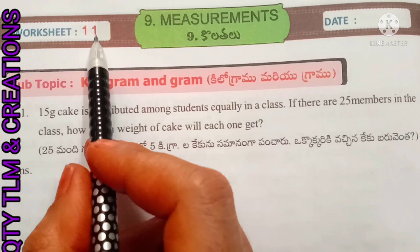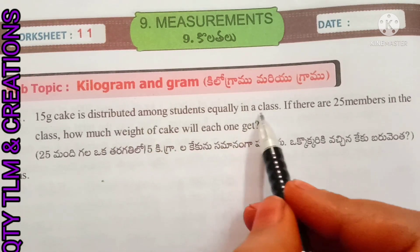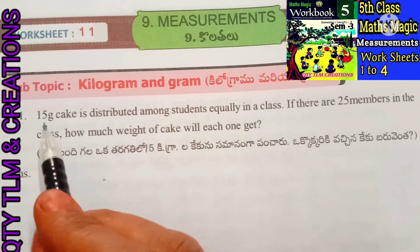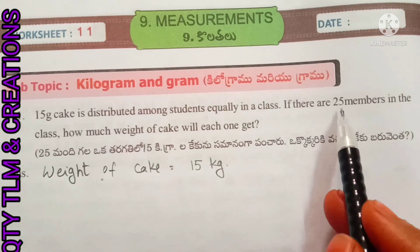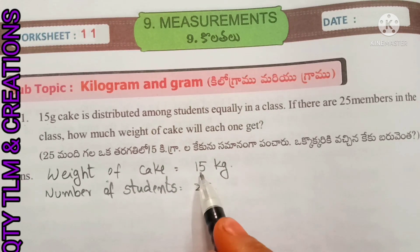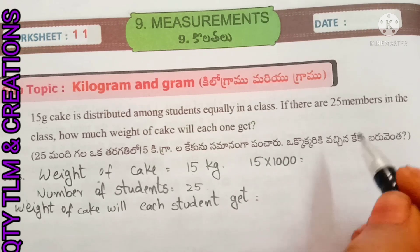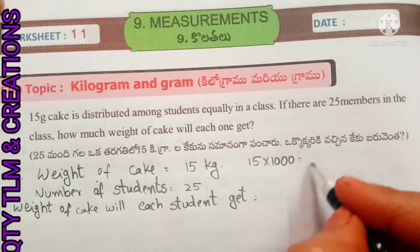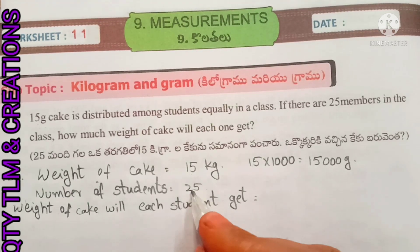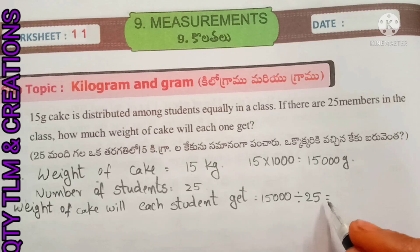Worksheet number 11, subtopic: kilogram and gram. First question: 15 kilograms of cake is distributed among students equally in a class. If there are 25 members in the class, how much weight of cake will each one get? Weight of cake: 15 kilograms; number of students: 25 members. We convert 15 kilograms into grams: 15,000 grams. Weight of cake each student gets: 15,000 grams ÷ 25 = 600 grams.